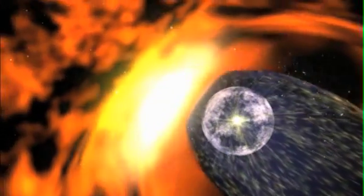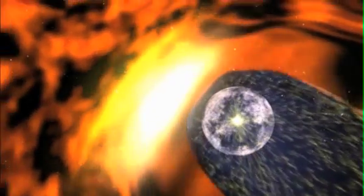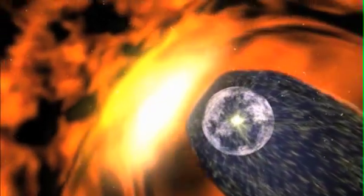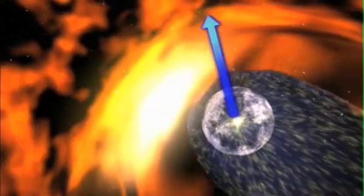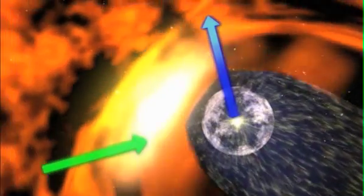Like a bicycle traveling in a crosswind, the wind that the solar system feels is actually a combination of the solar system's movement relative to the galaxy and the movement of the interstellar medium itself.